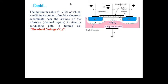The minimum value of gate-to-source voltage that attracts a sufficient amount of mobile electrons near the surface of the substrate, forming a channel between the drain and source, is the threshold voltage. For NMOS, the threshold voltage is positive, because we are applying a positive gate-to-source voltage.